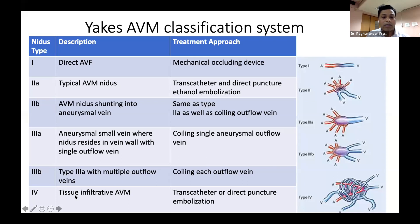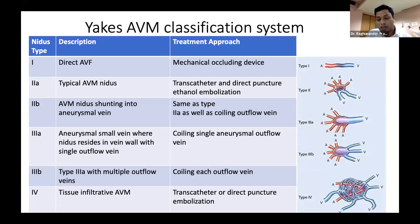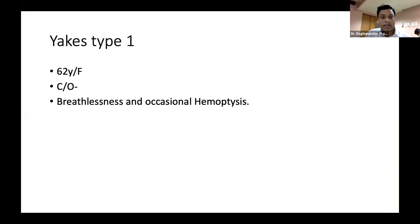Type 4 lesions are tissue-infiltrative AVMs and are very difficult to treat by transcatheter, transarterial, or transvenous approaches. Sometimes you need to treat these lesions by direct puncture and place embolic material into the treating vessels.